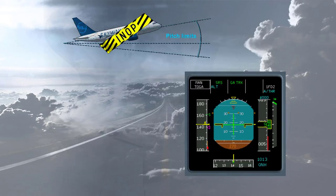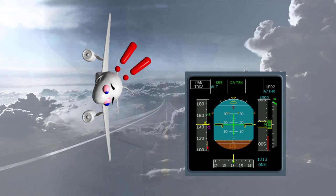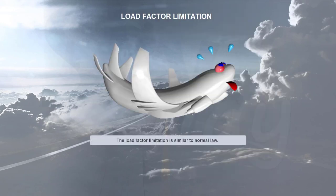Pitch attitude protection is lost and the flight control computers will not limit the nose-up or nose-down pitch attitude. On the PFD, the green dashes which mark the protection limits in normal law are replaced by amber crosses. Bank angle protection is also lost, and on the PFD the green dashes are likewise replaced by amber crosses. The load factor limitation is similar to normal law.